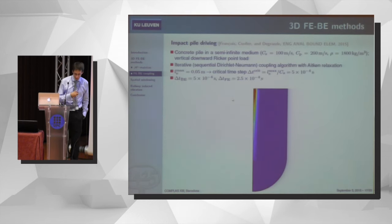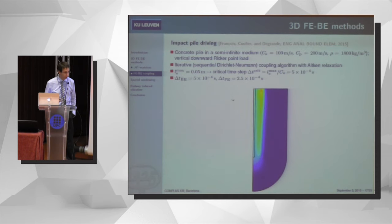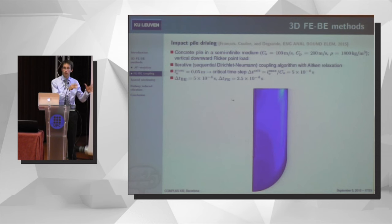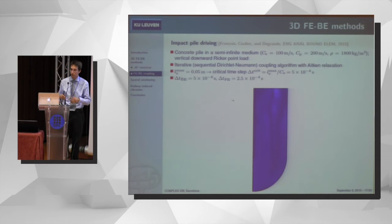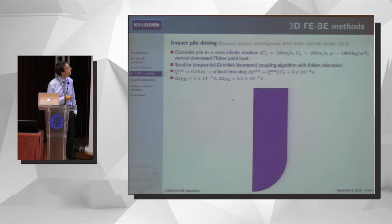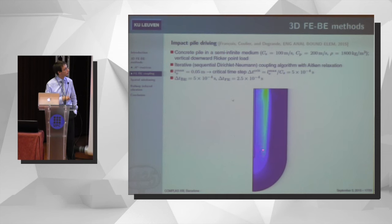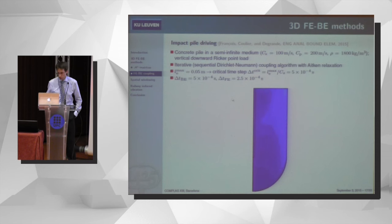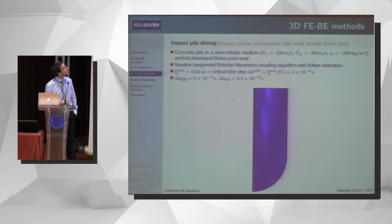That was an example in the frequency domain. You can also do transient calculations in the time domain, and the main advantage of using an iterative method is that you can use different time steps for the finite element and boundary element sub-domains. Here is one application showing an impact on a concrete pile, which leads to a pressure wave in the pile itself and then a Rayleigh wave in the soil, which can have an impact on surrounding structures.